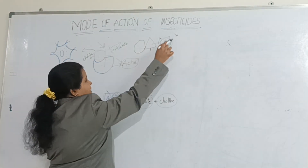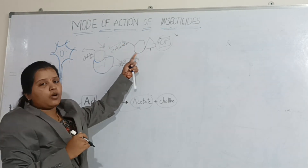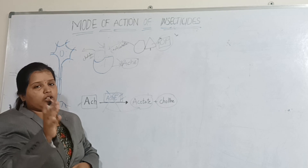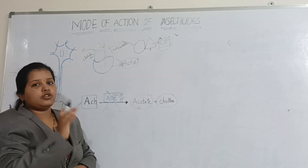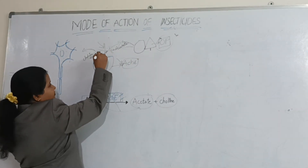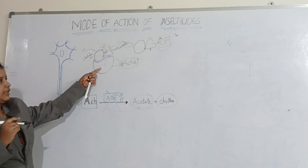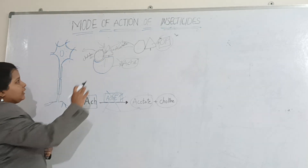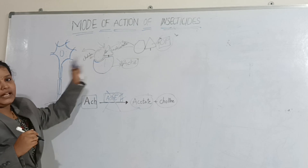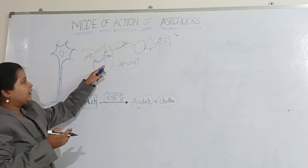Organophosphate insecticides also have a similar shape to acetylcholine. If we spray a crop with organophosphate insecticide and the insect consumes it, this organophosphate molecule will go and sit in the acetylcholinesterase receptor. A part of the molecule will disintegrate, but the other part will permanently bind to the receptor, not allowing natural acetylcholine to bind there.